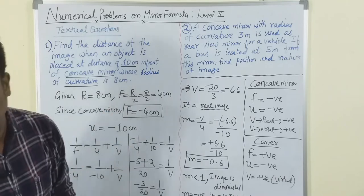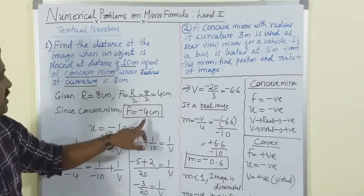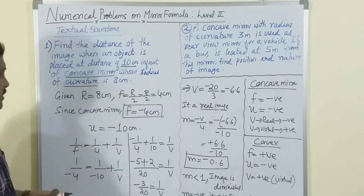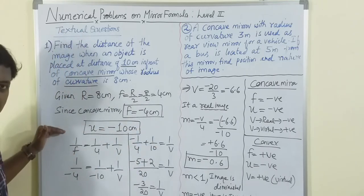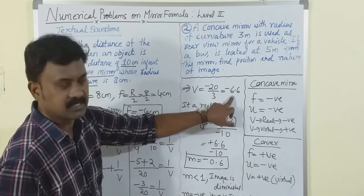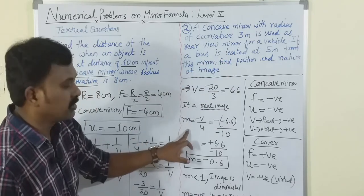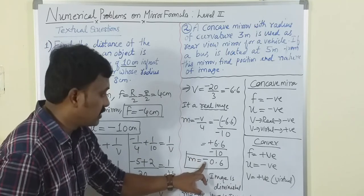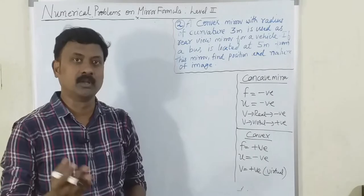So to summarize: radius of curvature was given, from that we calculated focal length as half of radius of curvature. U was taken as negative. Substituting in the mirror formula gave v = -6.6, meaning a real image. Magnification came out negative and less than 1, so the image is inverted and diminished.